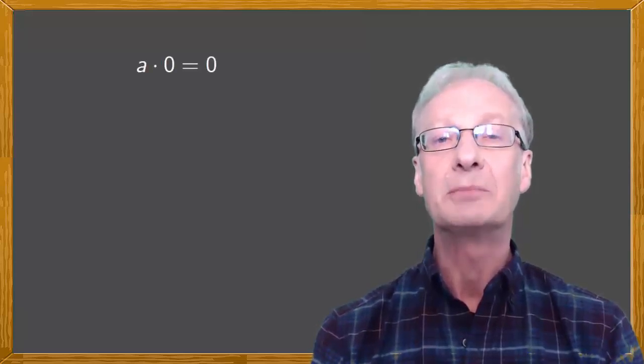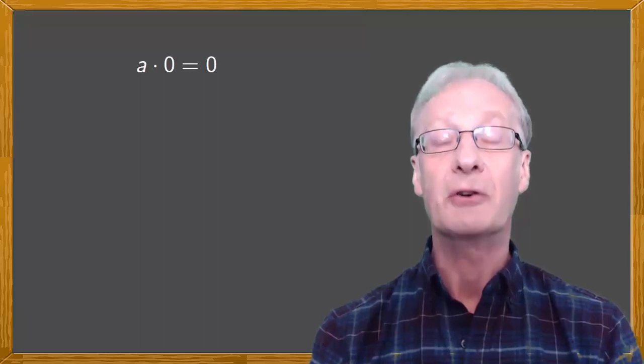As you know, if you multiply any number by zero, the result is zero. But has anyone ever shown you a proof of this? That's what I'm going to do in this video. I'm going to show you that if you take any number a, then a multiplied by zero is zero.